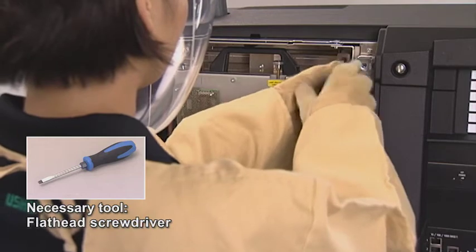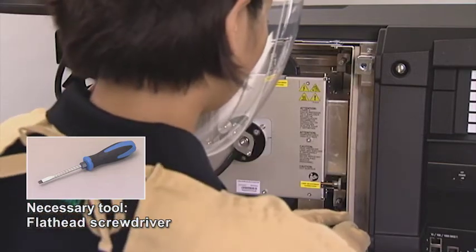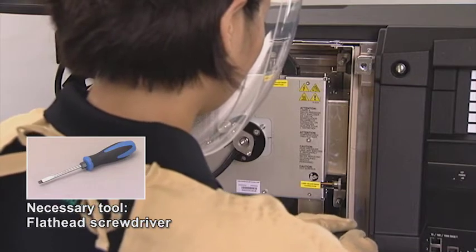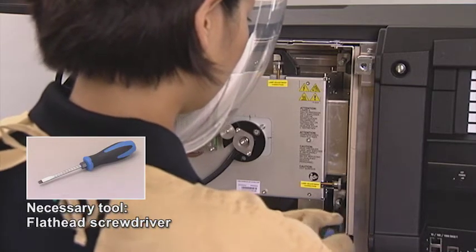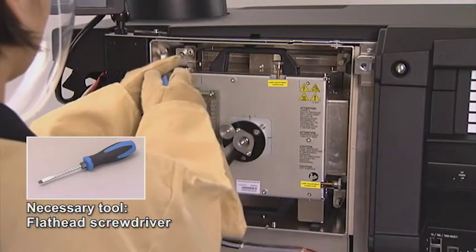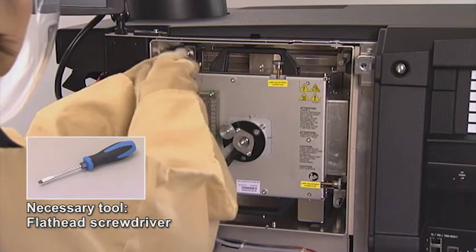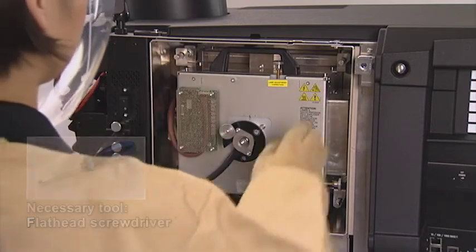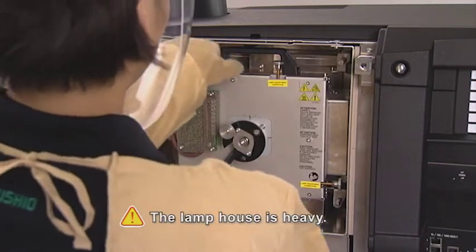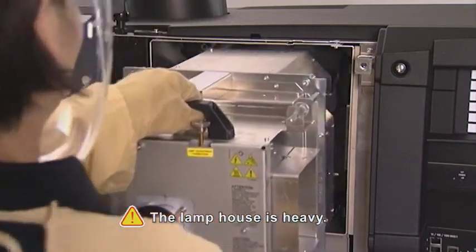Release the three spring lock screws of the lamp house. Take the lamp house by the handles and pull it out from the projector.